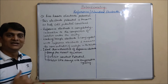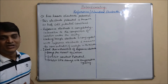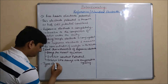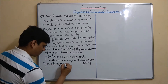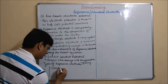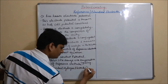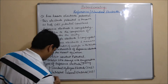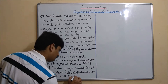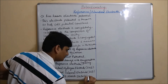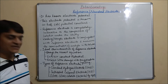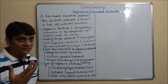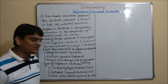The first type is the standard hydrogen electrode, the second is the saturated calomel electrode, and the third is the silver-silver chloride electrode. I have already discussed the standard hydrogen electrode and the saturated calomel electrode in my previous videos. In this video, I am going to discuss the silver-silver chloride electrode.